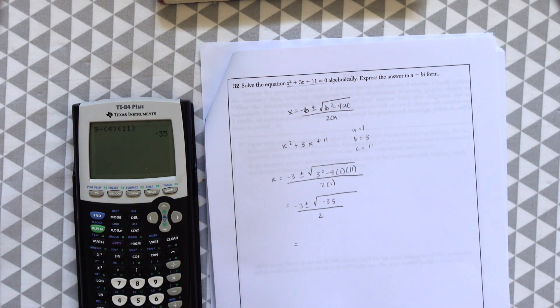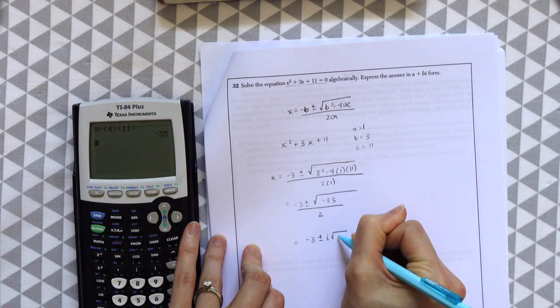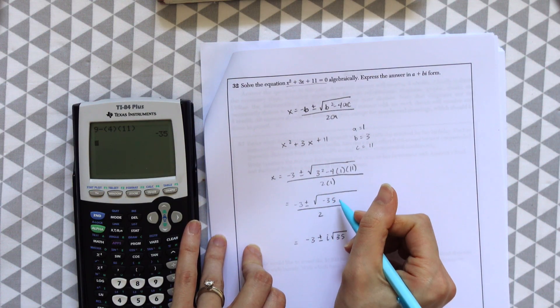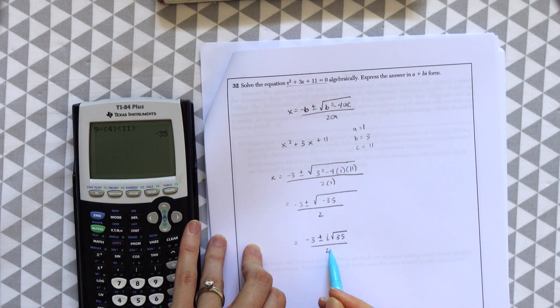And the rule for negatives under a radical is a no-no. So we're going to have to take out an i. So this is going to be negative 3 plus or minus i times radical 35. This can't be reduced anymore, because 35 is only divisible by 7 and 5. So that's no good.